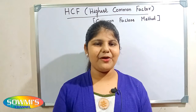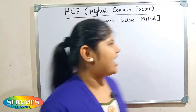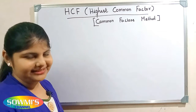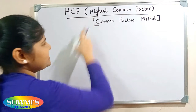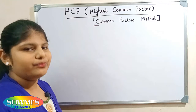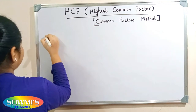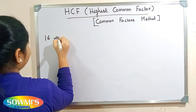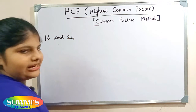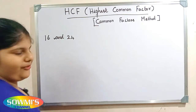Hi friends, welcome to this channel. In this video, I'm going to teach how to find HCF using the common factors method. HCF stands for highest common factor — the largest common factor of two or more numbers. For example, we can take 16 and 24, and now we have to find the factors of 16 and 24.